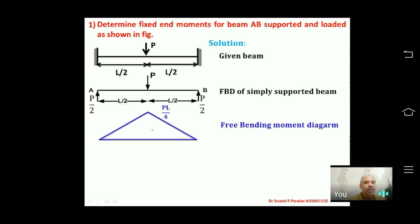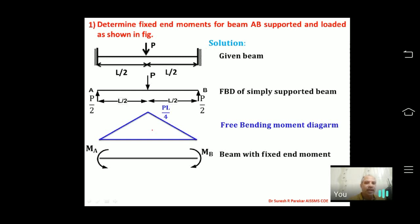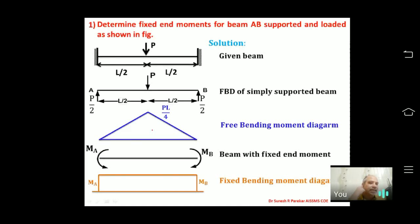The first diagram is due to simple support (free BMD). For the second diagram, the beam has fixed end moments: MA considered anti-clockwise at left and MB clockwise at right. If values come out positive, our assumed directions are correct; otherwise we correct them. The fixed bending moment diagram is rectangular since MA = MB (beam is symmetrical about center).